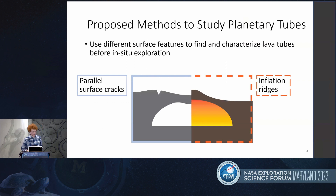I'm proposing two methods to study planetary lava tubes using two different types of surface features: one is using parallel surface cracks, and the other is inflation ridges. These are the two main prongs of my talk, which I'm introducing here and will go into in much more detail.